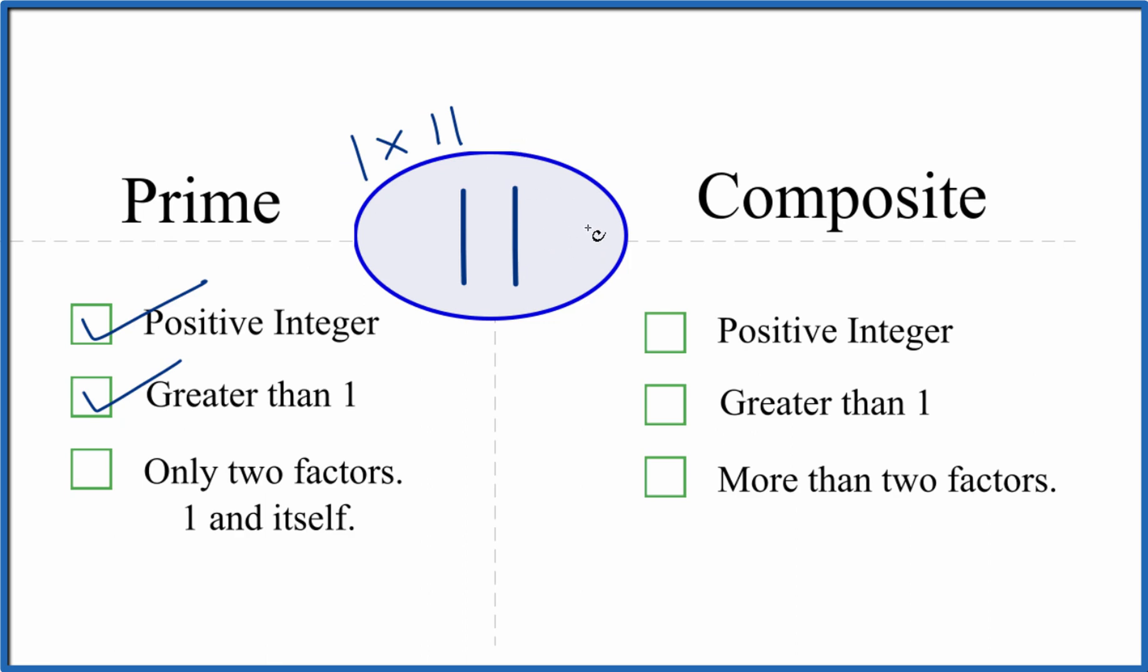It turns out there aren't any other numbers that divide evenly into 11. So there are only two factors, 1 and 11. So 11 is a prime number.